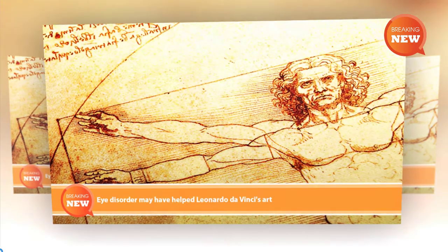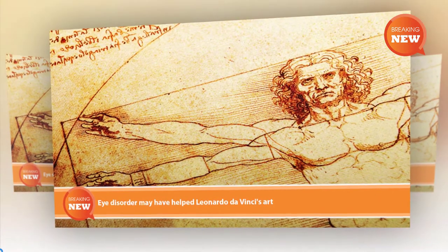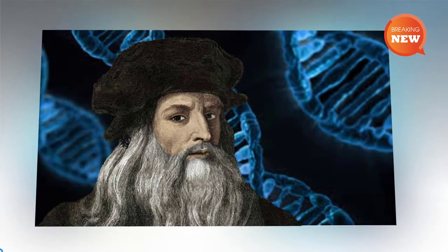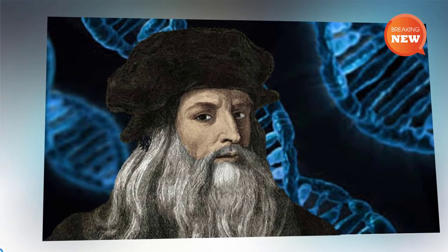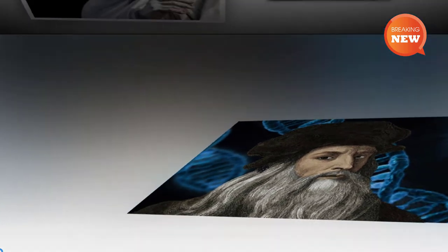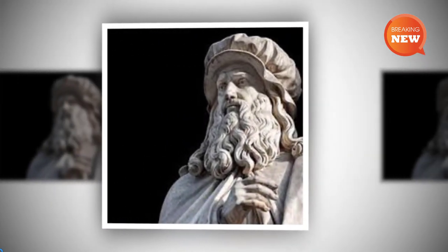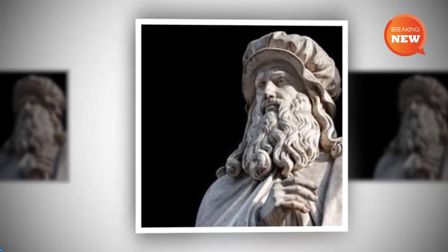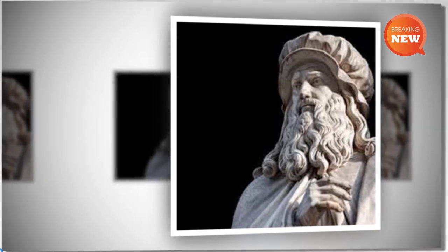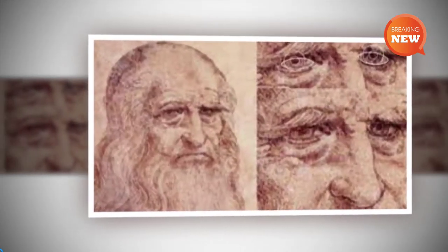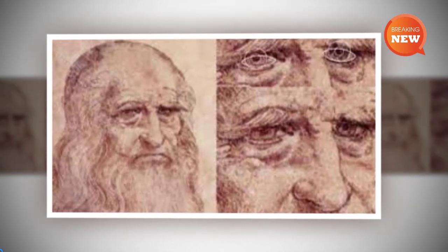An eye disorder may help explain Leonardo da Vinci's talent for three-dimensional representation and the sense of perspective in his mountain landscapes, according to research published in an academic journal. The study looked at two sculptures, two oil paintings, and two drawings by the Renaissance master, which showed a consistent exotropic strabismus angle of -10.3 degrees.